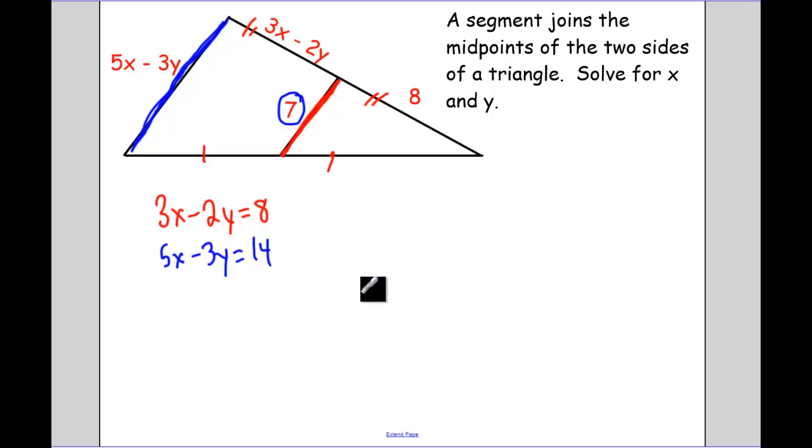Now solving that system. Elimination is going to be our best option. So I'm going to take it. I'm going to multiply the top equation by a negative 3. So I get a negative 9X plus a 6Y equals a negative 24. I'm going to multiply the bottom equation by 2. So I get a 10X minus a 6Y equals a 28.